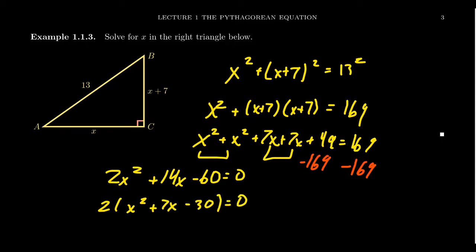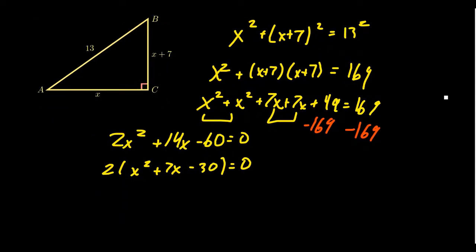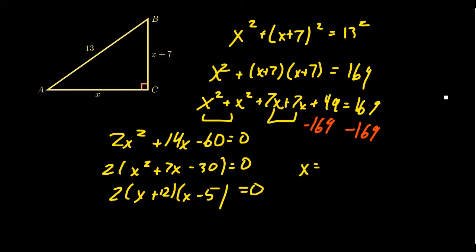Continuing to factor, we look for factors of negative 30 that add up to 7. That happens with +12 and −5, since 12 × (−5) = −30 and 12 − 5 = 7. Setting each factor equal to zero, X could equal −12 or X could equal 5. Since negative 12 doesn't make sense as a side length, X must equal 5.